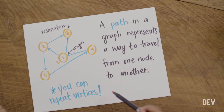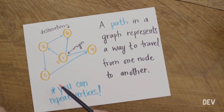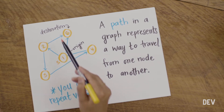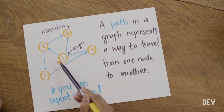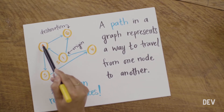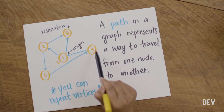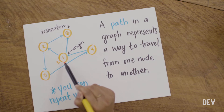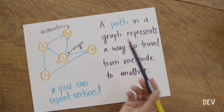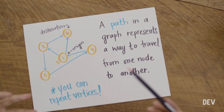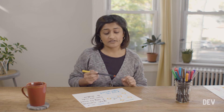A path in a graph just represents a way to travel from one node to another. For example, you might want to find a path between two nodes, starting at node 1 and ending at node 6. There are lots of different paths that you can sometimes take in a graph. A path can be any set of edges that connect vertices leading from the origin to the destination. In this example, we could start at 1, our origin node, go to 2, head over to 3, walk over to 4, and then end up at 6. Notice that in a path you can repeat vertices — we're not even talking about the shortest path or the most efficient. We're just talking about any path that allows us to get from node A to node B.